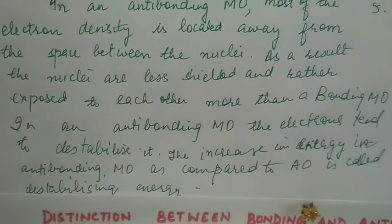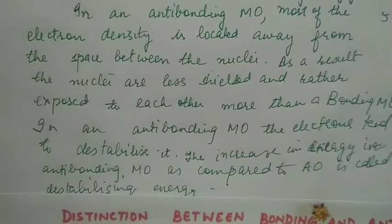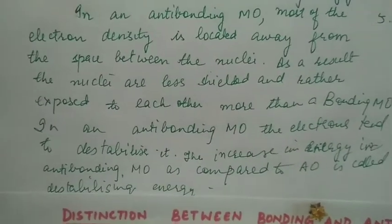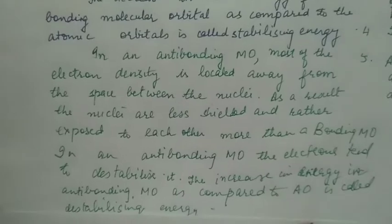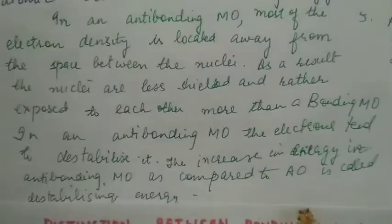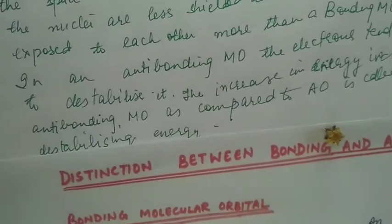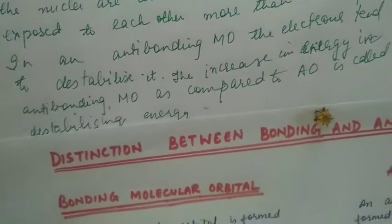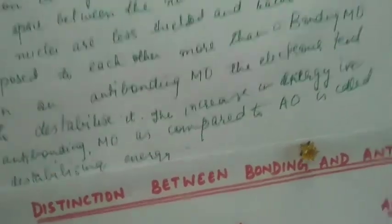In an anti-bonding molecular orbital, the electrons tend to destabilize it. The increase in energy in anti-bonding molecular orbital as compared to the atomic orbital is called destabilizing energy.